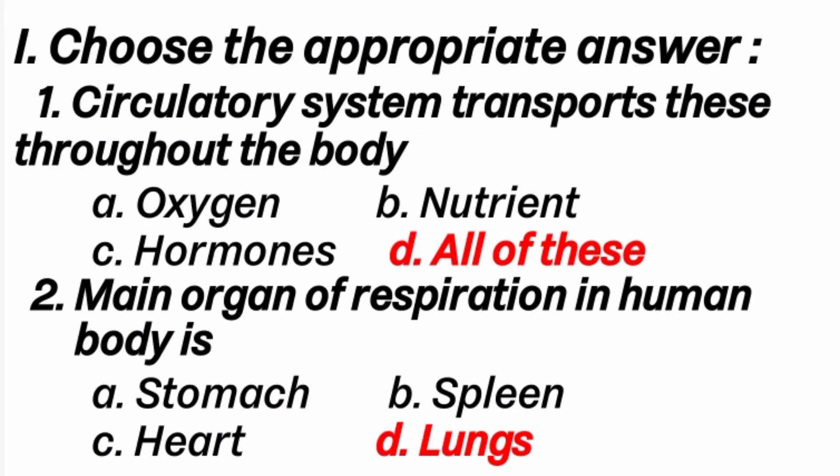First, from the letter choose the appropriate answer. First question: the circulatory system transports this throughout the body. The answer is option D, all of these, because the circulatory system includes blood, blood vessels, lymph and heart. The blood transports oxygen, hormones and nutrients throughout our bodies.